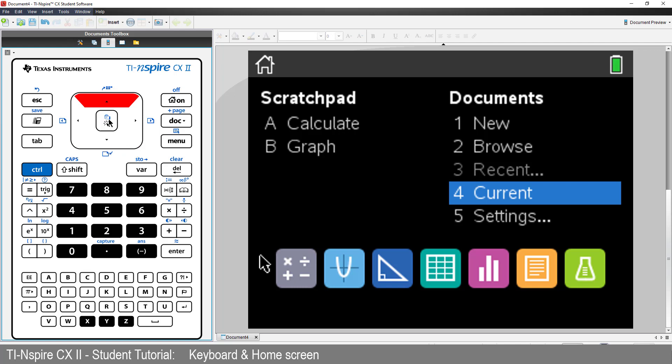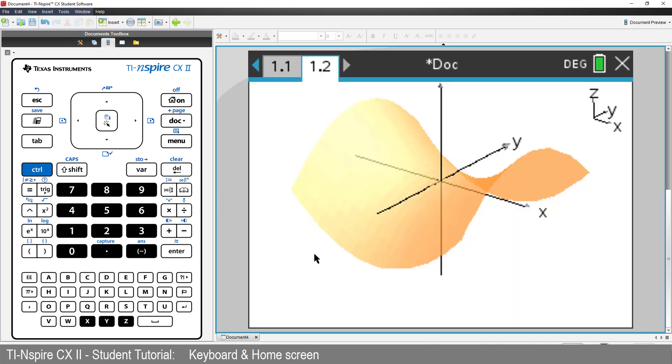The centre of the touchpad can also be used to select objects by simply pressing down briefly or clicking. If you hold it down for a second or two, you can also grab items. We'll practice this later.